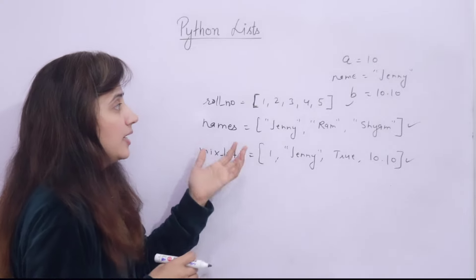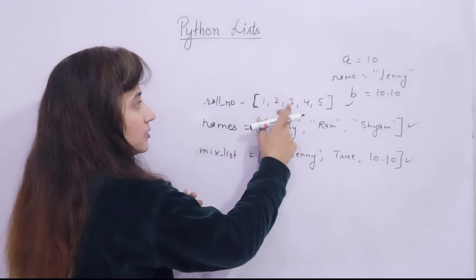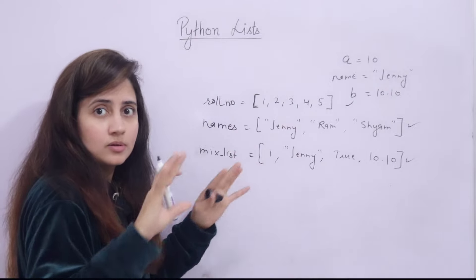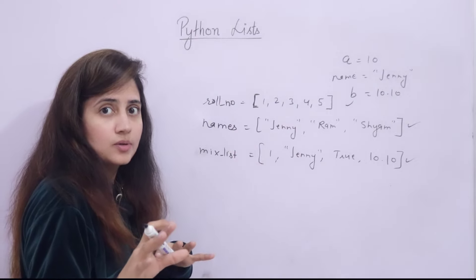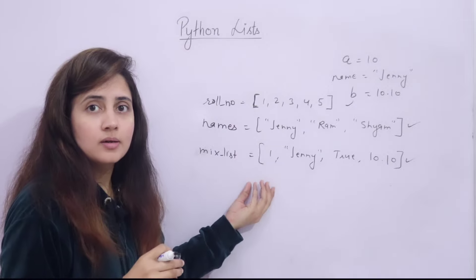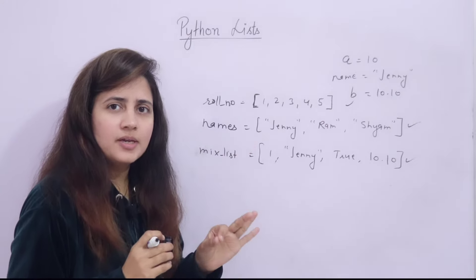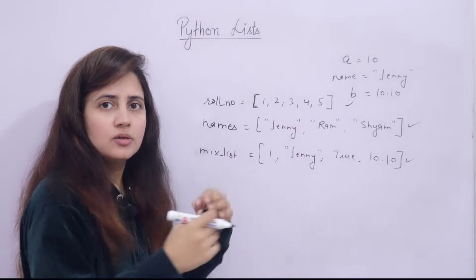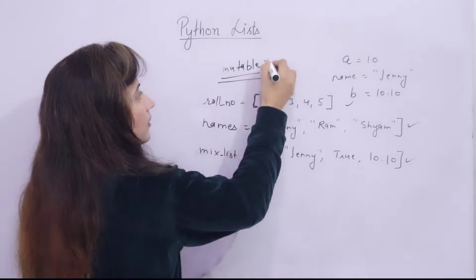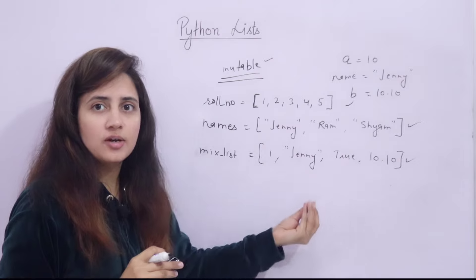Now some characteristics of list: lists are ordered. Items have a defined order and this order of items will not change. One more characteristic — lists are mutable. Mutable means can change, immutable means cannot change. Mutable means after creating the list, we can alter the list, we can change the list, we can add some element, we can remove some element.